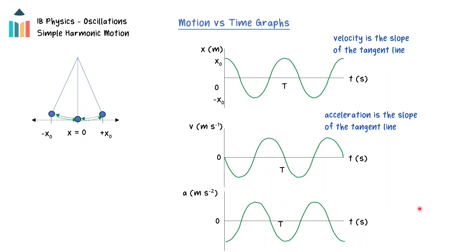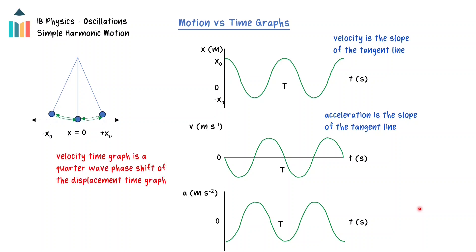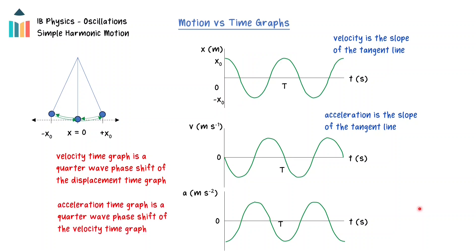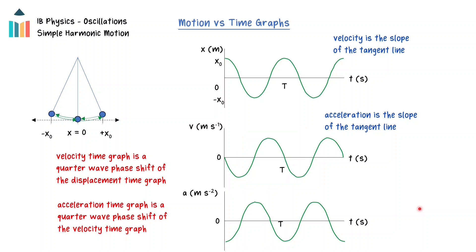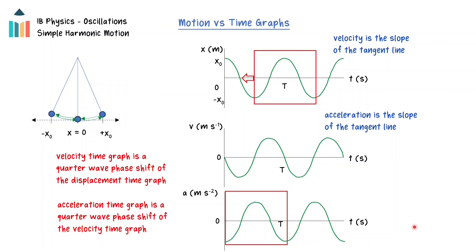The three motion time graphs can also be related through phase shifts. The velocity time graph is a quarter wave phase shift of the displacement time graph. The acceleration time graph is a quarter wave phase shift of the velocity time graph. Notice that in comparing the acceleration and displacement time graphs, the two conditions for simple harmonic motion are demonstrated: the acceleration is directly proportional to the displacement but points in the opposite direction towards the equilibrium position. Comparing the displacement and the acceleration time graphs, we see that there is an overall phase shift of half a wavelength, which is equivalent to a reflection in the time axis.